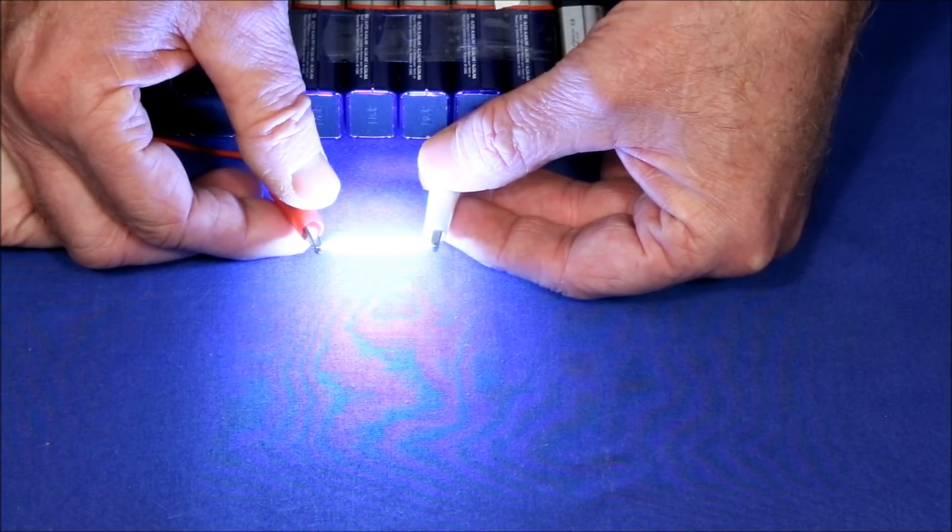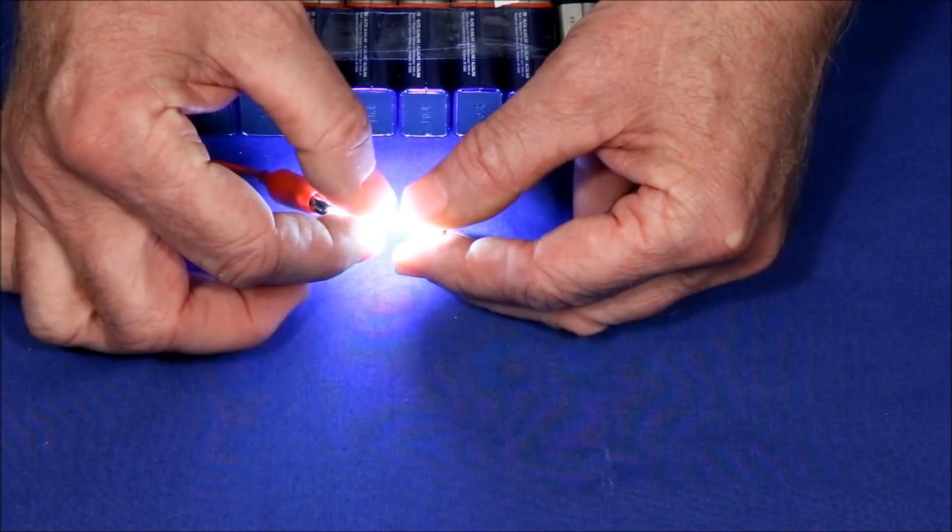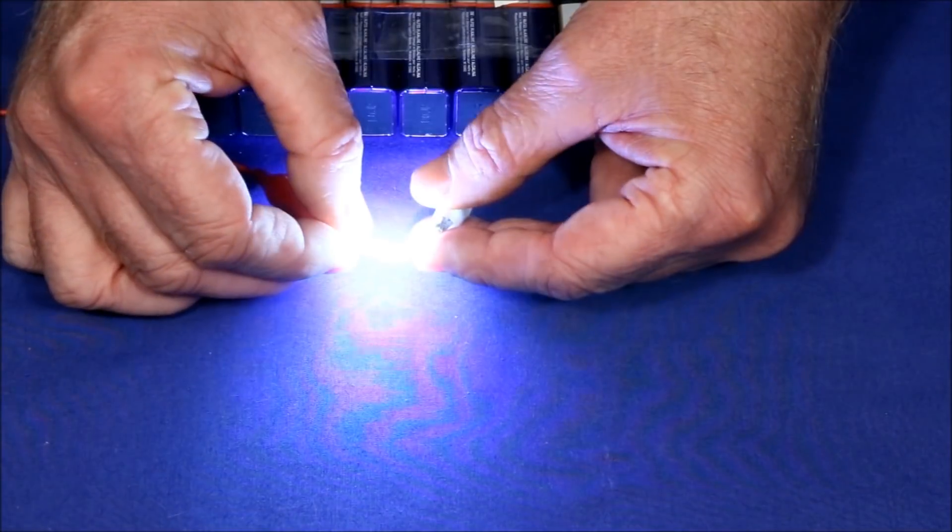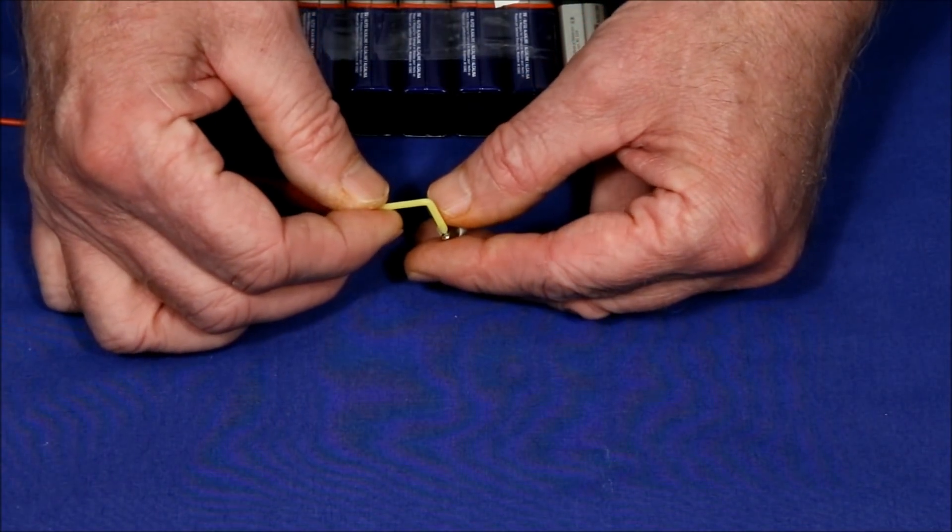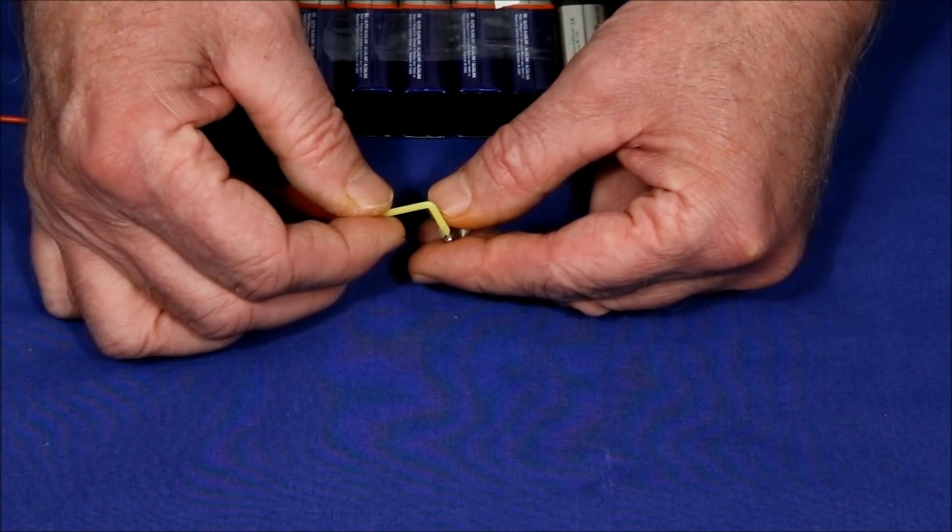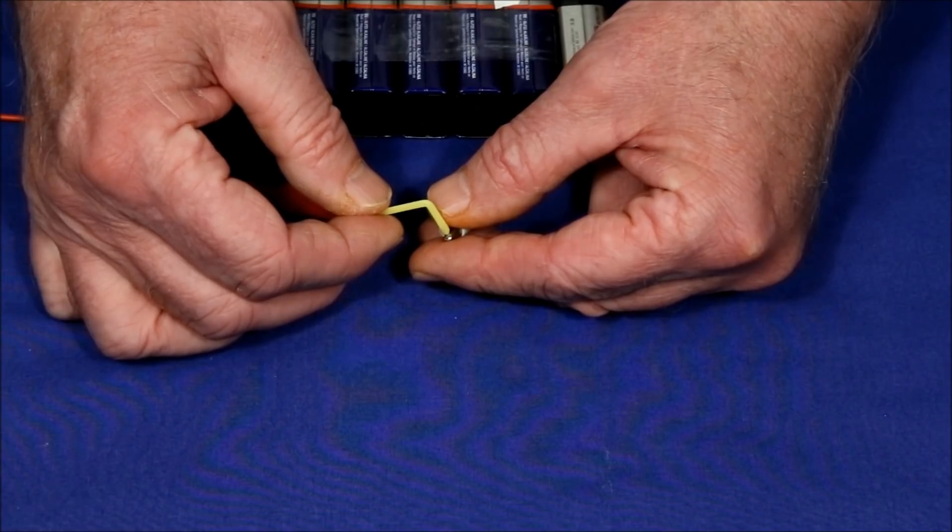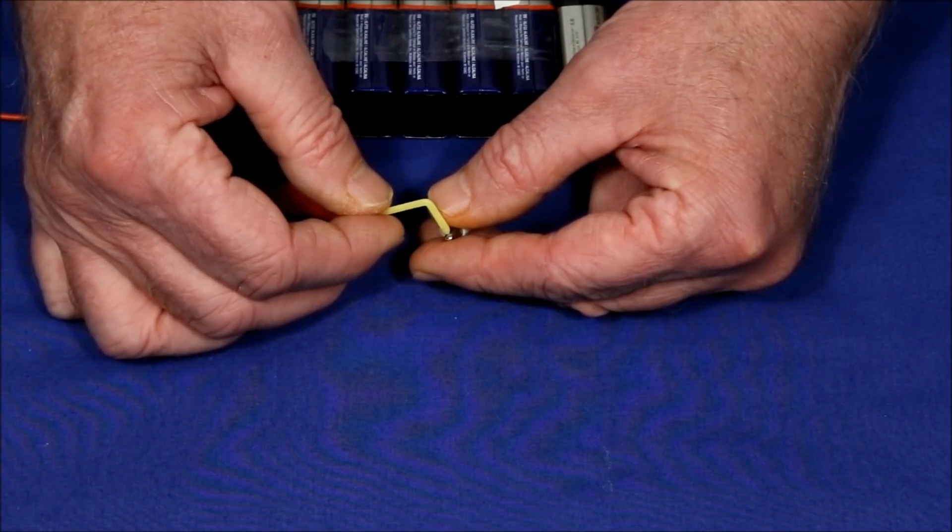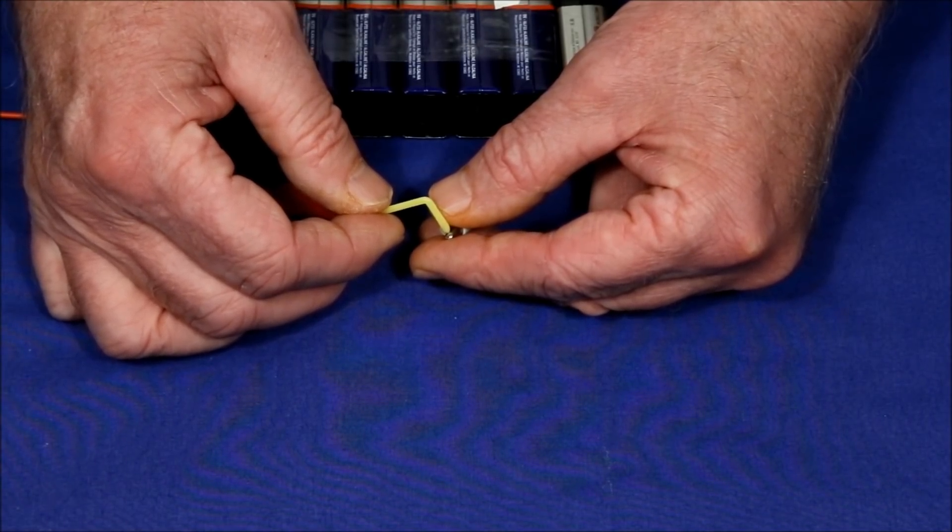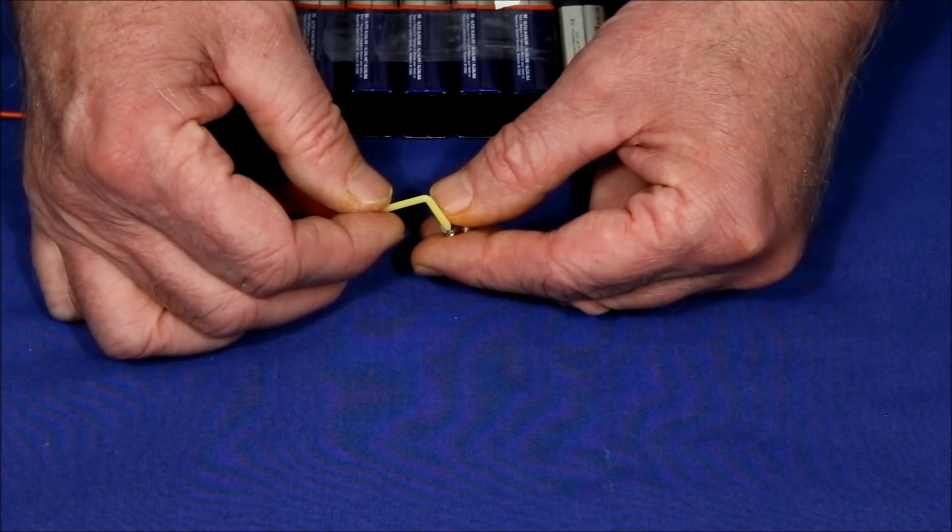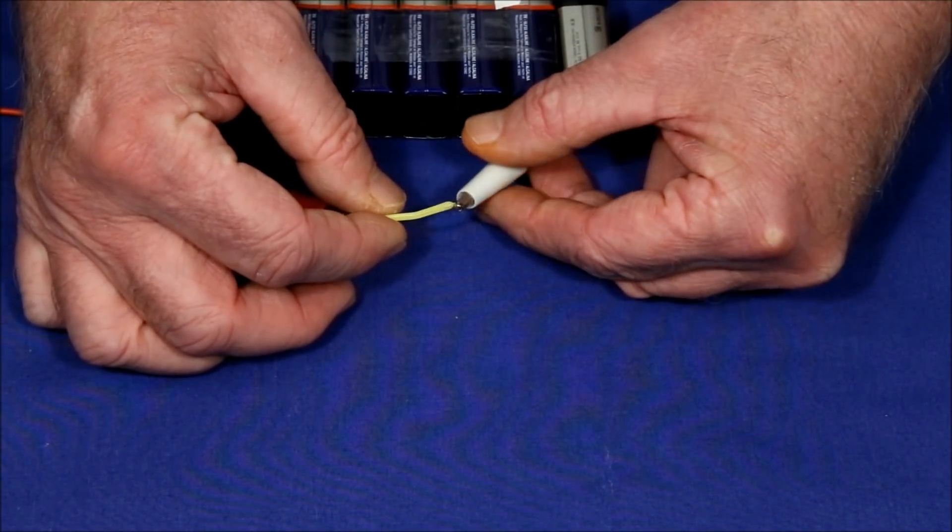If there's one problem with these, it's that they are delicate. You bend them like this and they break very easily. That's because the LEDs are mounted on a glass, or in some cases laboratory-grown sapphire rod, and that's very brittle and easy to break.